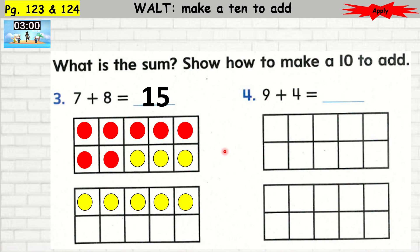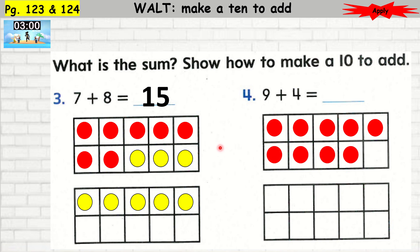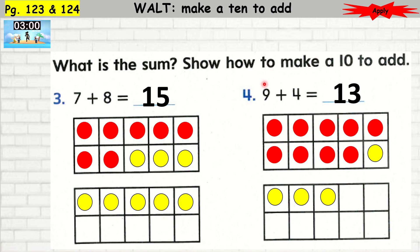9 plus 4. I'm going to draw circles to help me. 1, 2, 3, 4, 5, 6, 7, 8, 9. I'm going to change the color so I don't get confused — I'm going to draw yellow circles now. So 1, 2, 3, 4. Because I have 4. So here's 9 plus 4: I have 10, and then you have 3. So 10 plus 3 is 13.